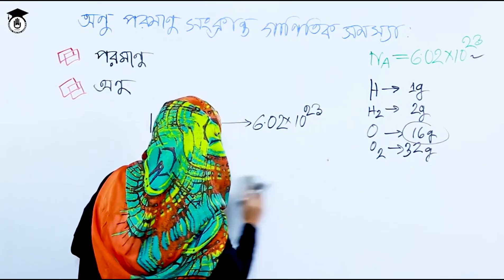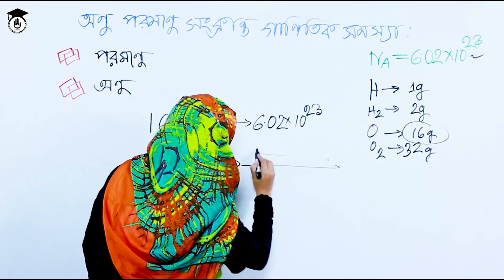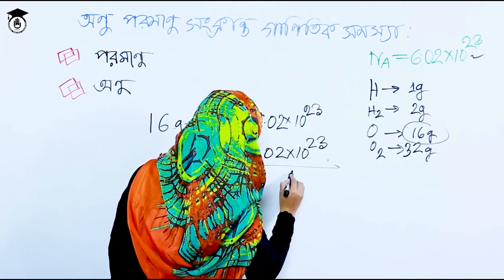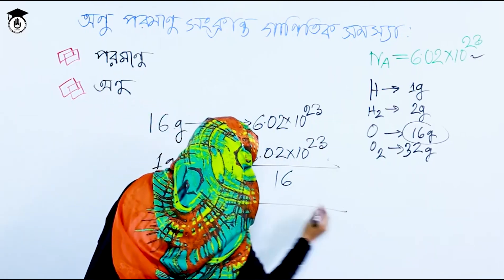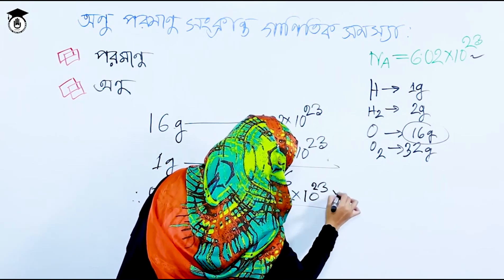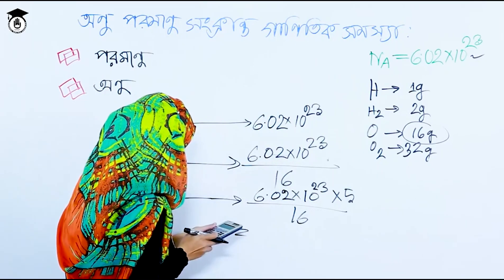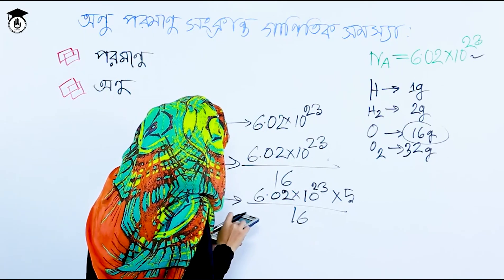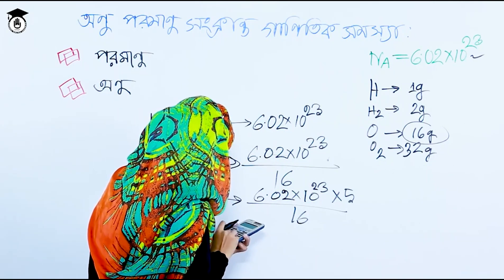We know how to determine our statistics using these standards. 1 gram of hydrogen corresponds to 6.02 into 10 to the power of 23 atoms. So for 5 grams, the number of atoms is 6.02 into 10 to the power of 23, divided by 16, multiplied by 5.